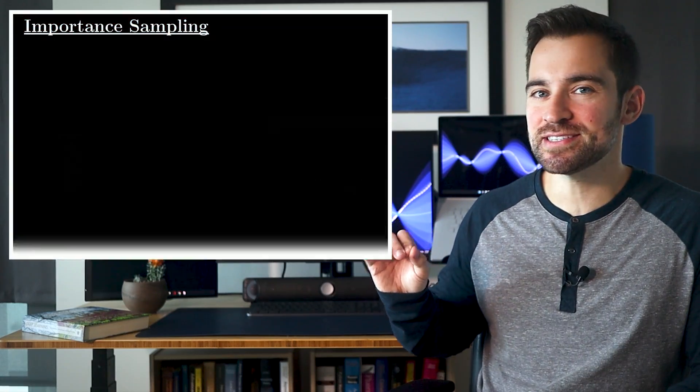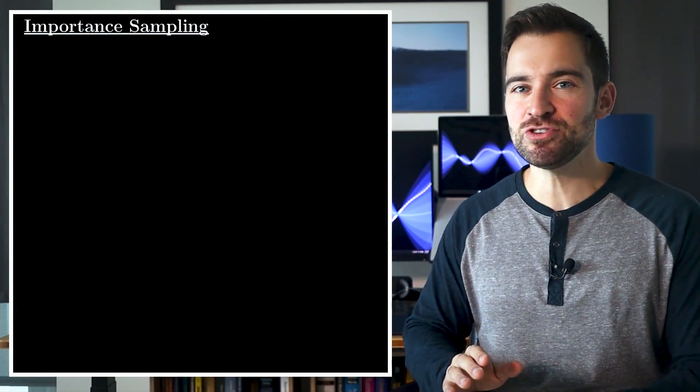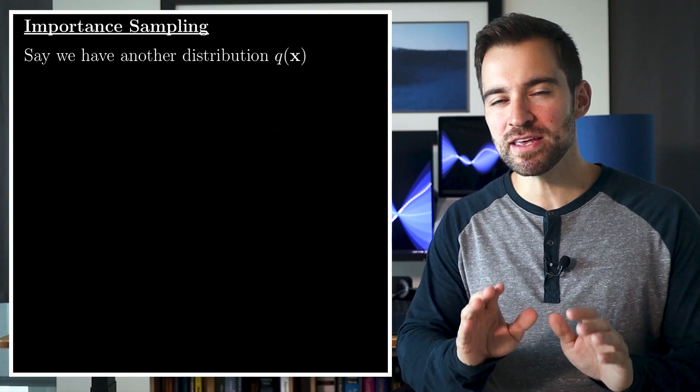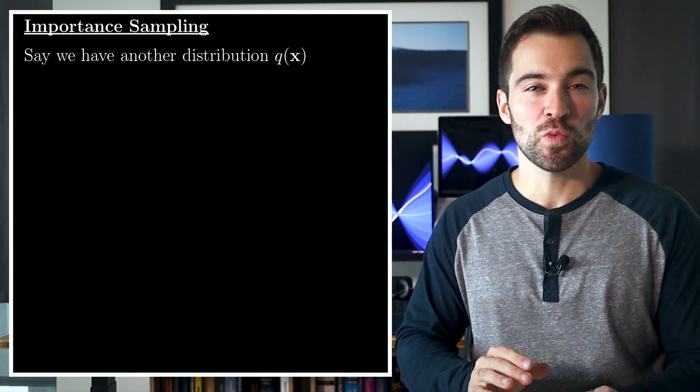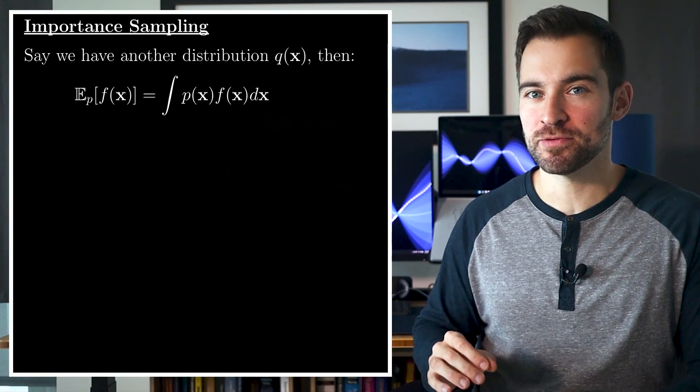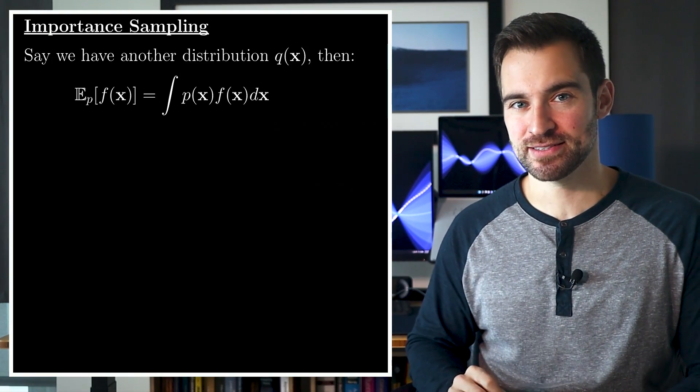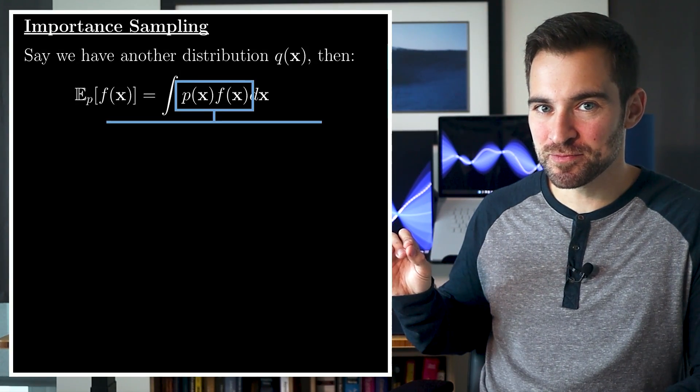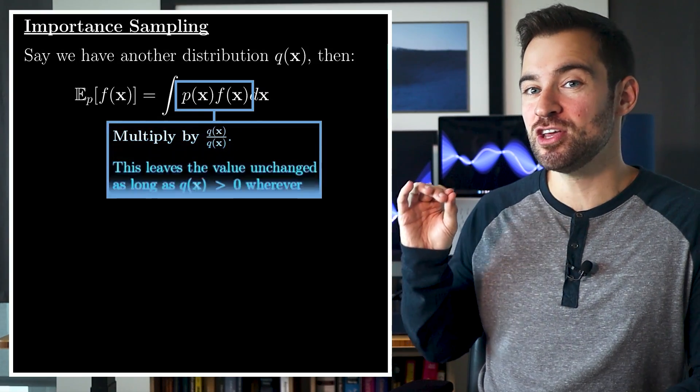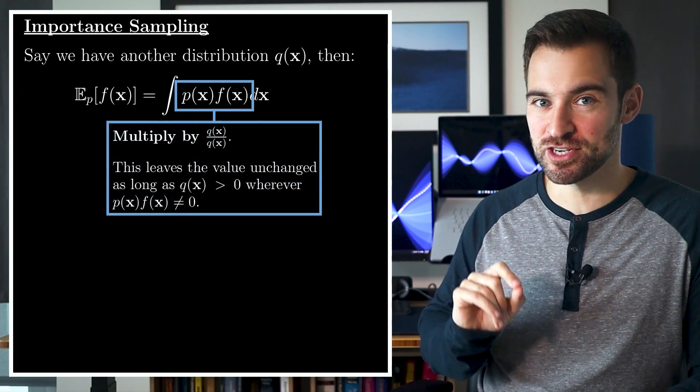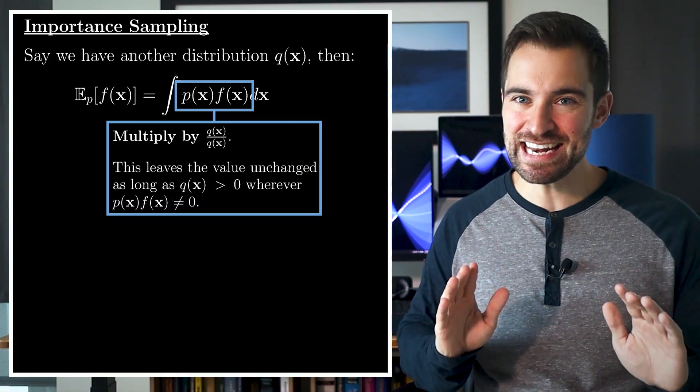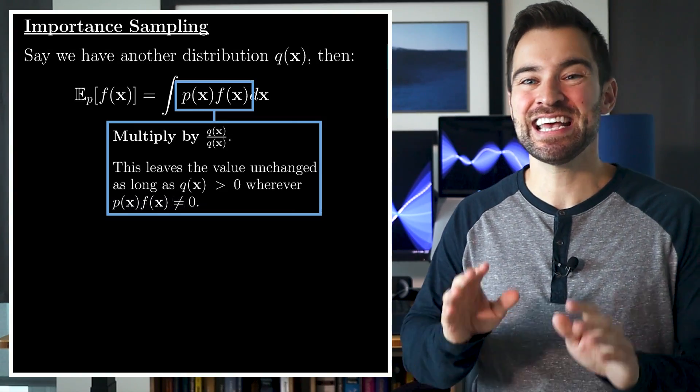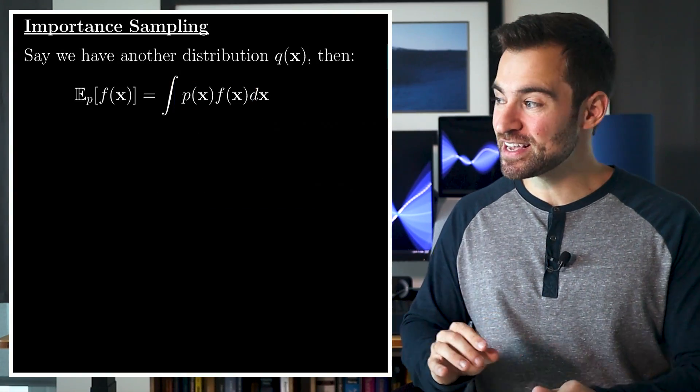We start by introducing a new distribution q(x). As we'll see, this is something we get to choose. And again, we are interested in the same expectation we had earlier. Note, this still involves p(x). Okay, now, here's the trick. The trick of the century. We're going to take this term and multiply it by q(x) over q(x), which is just one. We can do this without damaging anything, as long as q(x) is greater than zero, whenever p(x) times f(x) is non-zero. And that gives us this integral.